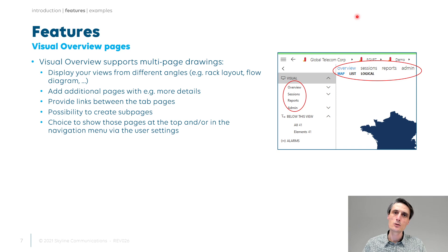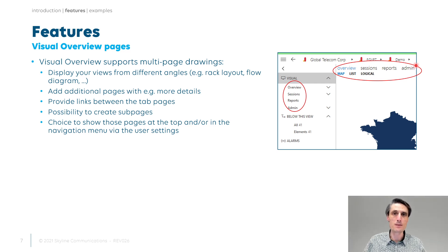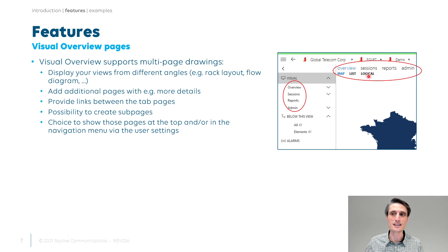Next to the breadcrumbs, you'll notice that some of the drawings, depending on how they have been designed, might have different tab pages. Those different tab pages allow you to visualize a different angle of the same view — maybe more like a rack layout, a flow diagram, or a map. In this case we have sessions, reports, and an admin, so you might have different angles on a specific Visio drawing. Every tab page might even have sub tab pages or child tab pages, so you can have quite some different pages there.